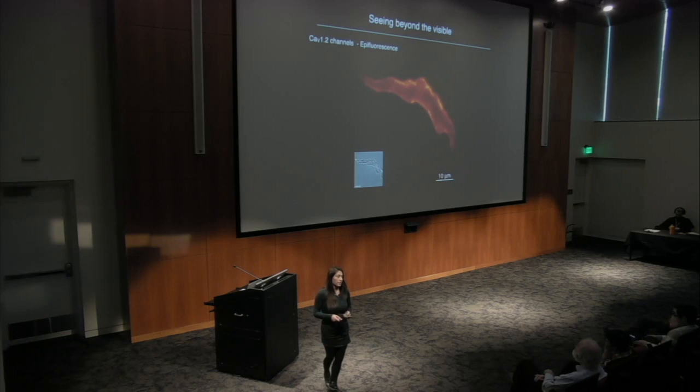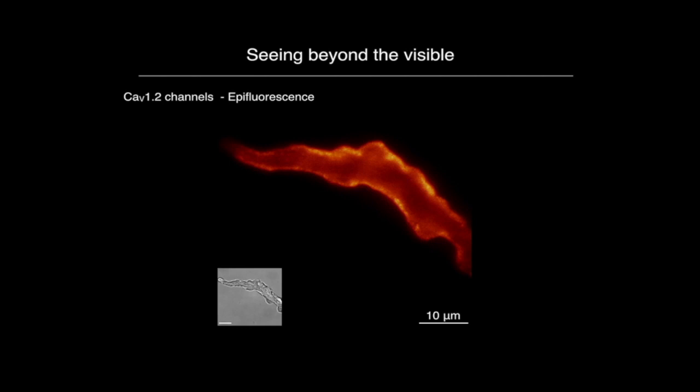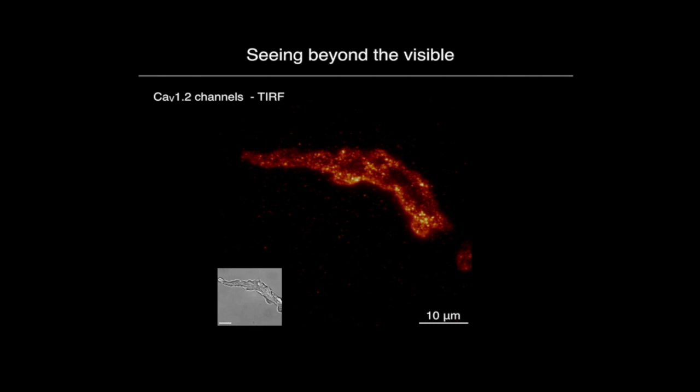Using total internal reflection microscopy — a technique that restricts illumination to a very thin layer close to the plasma membrane — ion channels looked more heterogeneous. But due to the diffraction limit of this technique, it was impossible for us to know if inside one of these puncta there were one or more ion channels. It wasn't until the development of super resolution microscopy that we could really look at how ion channels organized.